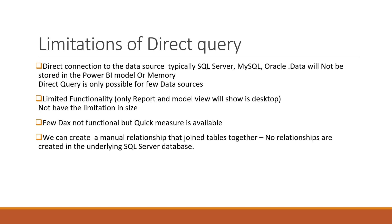Quick Measure in Power BI desktop allows you to just mention what you want — for example, product-wise sales — and it will generate the DAX for that. Quick Measure is present in import mode and in direct query, but in live connection we can't use Quick Measures. That is a limitation for live connection, while for direct query only a few DAX functions are not available.